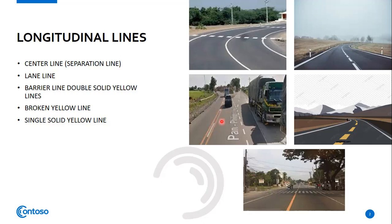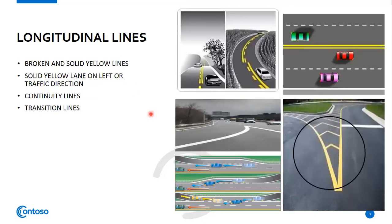The broken yellow line means overtaking is allowed, but remember the highway must be clear before you overtake. The single solid yellow line means overtaking is prohibited on both directions — both sides are not allowed to overtake where there is a single solid yellow line.